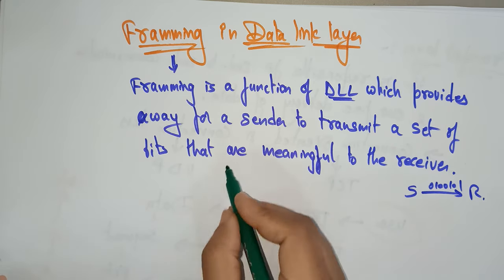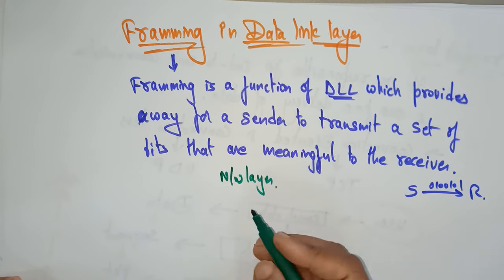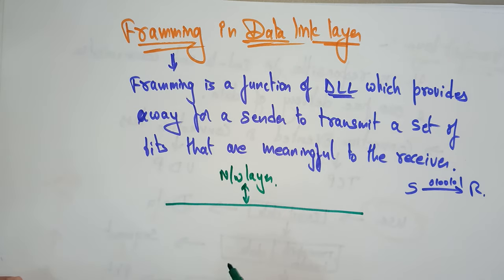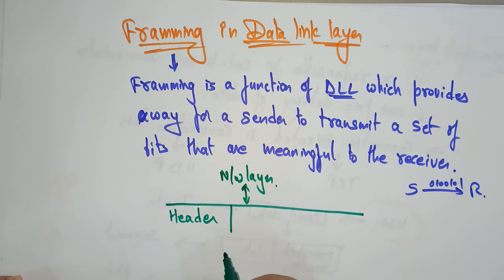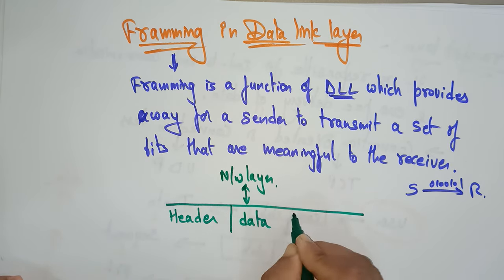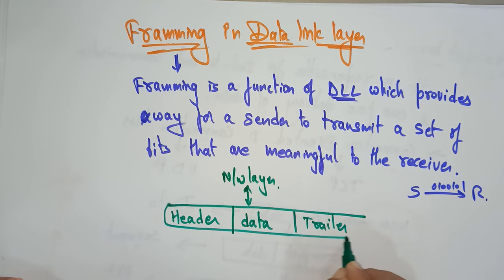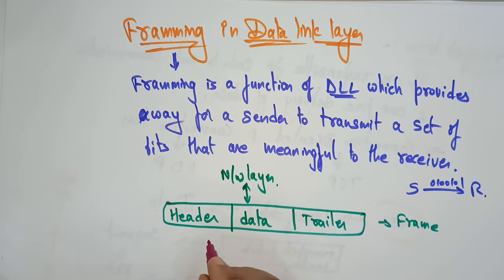Let me take an example. From the network layer, information is coming. The upper layer information is coming. The next layer of the network layer is the data link layer. So the data link layer sends data in the form of frames. Each frame consists of a header, the actual data that needs to be sent, and a trailer.